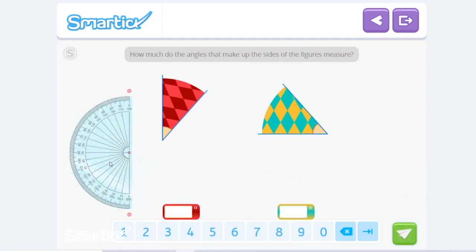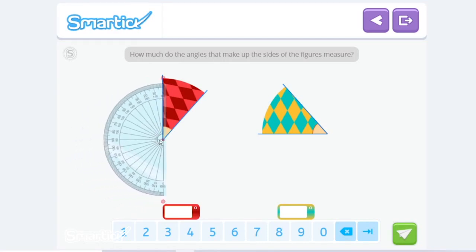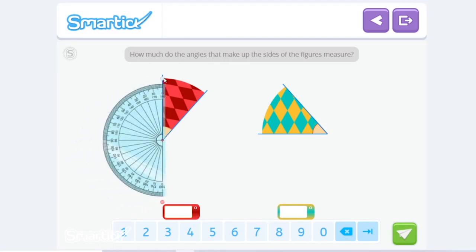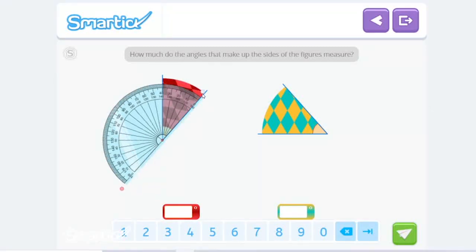Okay, let's grab the protractor and make sure that the center of the protractor aligns with the vertex. Now let's turn it so it aligns with one of the axes. And let's read it counterclockwise. So it would be 10, 20, 30, 40. 40 degrees.